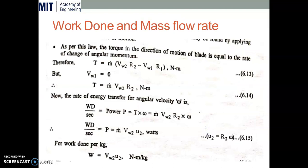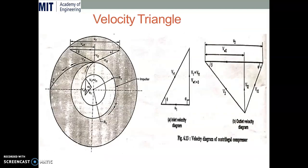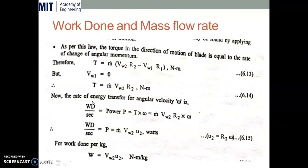Next, we need to find the work done and mass flow rate of air in a centrifugal compressor. The centrifugal compressor is a system in which vanes are mounted on a wheel, so we go for the torque. As per the law, torque in the direction of motion of the blade equals the rate of change of angular momentum — that is, final angular momentum minus initial angular momentum.